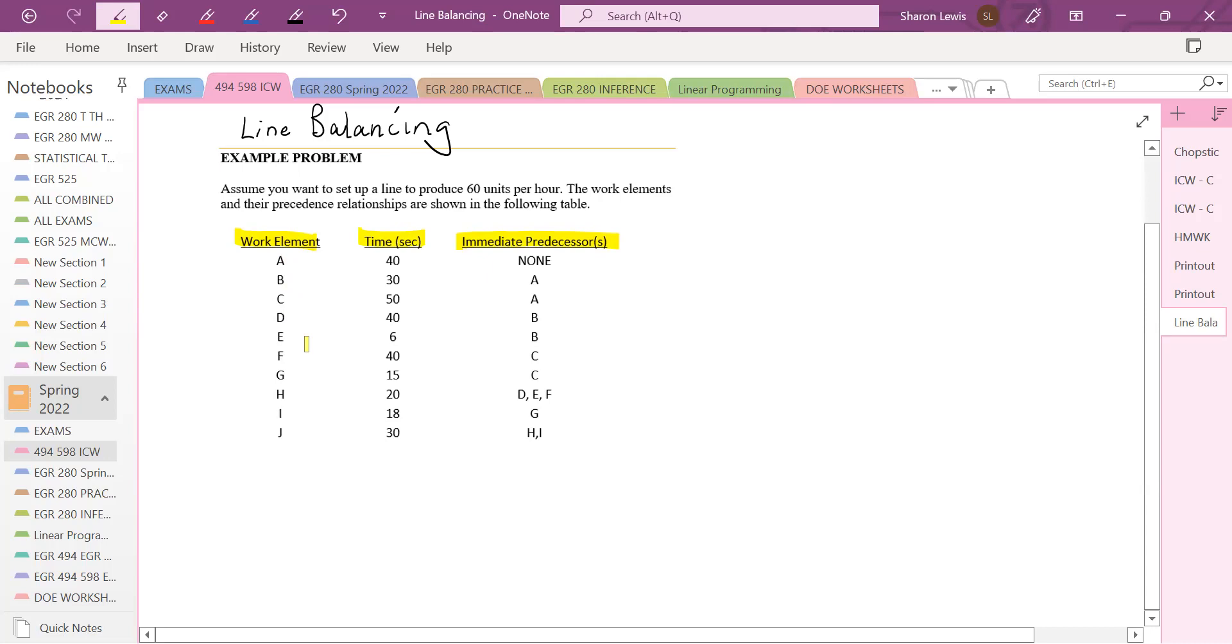Another important thing to notice is we have a given demand. We need to produce 60 units per hour. We're going to need to set up the assembly line so we don't violate any of these precedence restrictions. And we also still need to meet our demand.